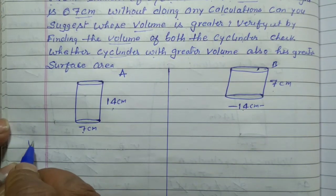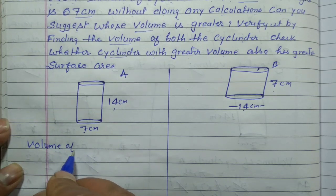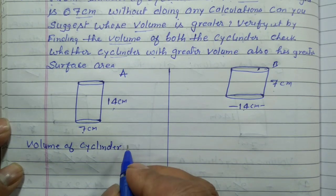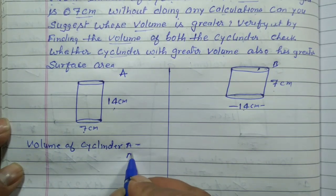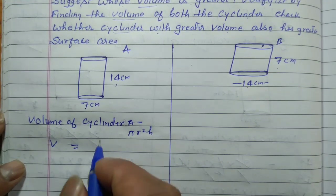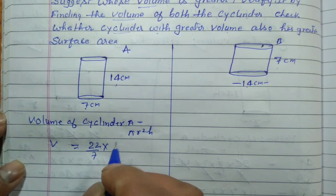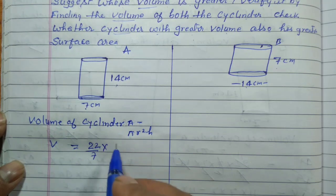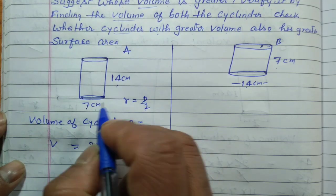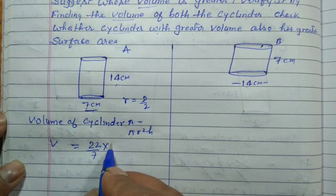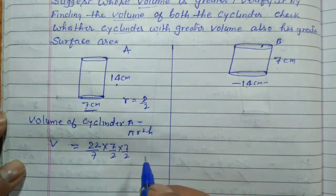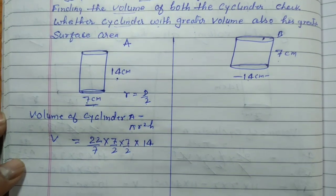तो हम पहले volume of cylinder A निकालते हैं। Volume of cylinder A क्या होता है — πR²H होता है। V = π, जो कि 22/7 होता है। Diameter दे रखा है, तो radius = D/2 = 7/2। Height 14 cm है।